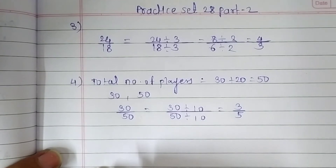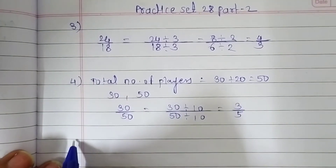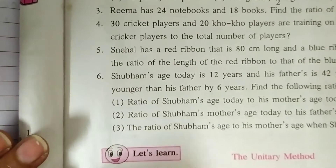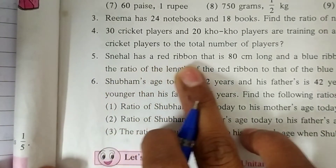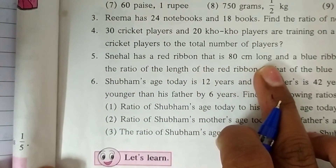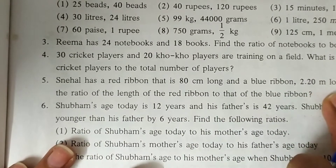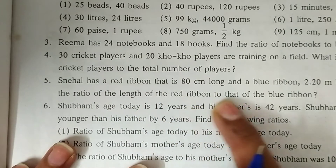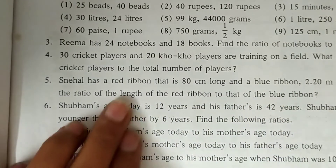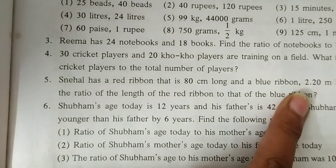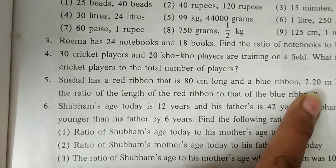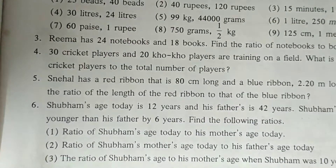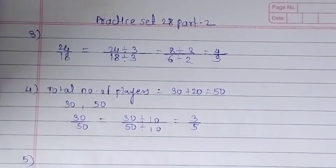So the ratio of cricket players to the total number of players is 3 upon 5. Now question number five: Sneha has a red ribbon that is 80 centimeters long and a blue ribbon 2.20 meters long. What is the ratio of the length of the red ribbon to that of the blue ribbon? We have to convert 2.20 meters into centimeters first.